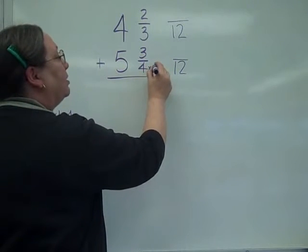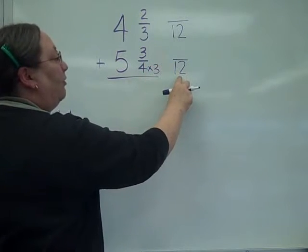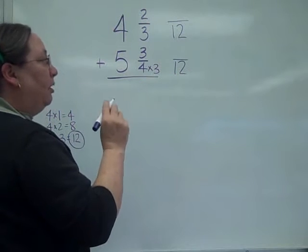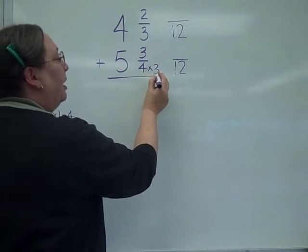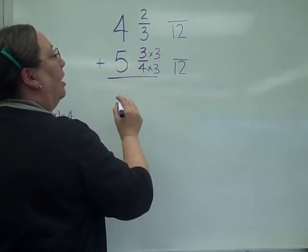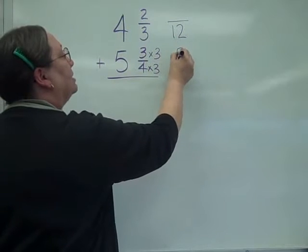I had to take 4 times 3 to get to the 12. And the rule you have to use, what you do to the bottom, you must do to the top. If I've multiplied the bottom by 3, I've multiplied the top by 3, and 3 times 3 is 9.